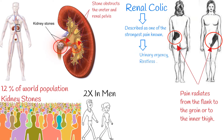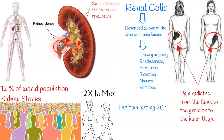This pain is sometimes accompanied by urinary urgency, restlessness, hematuria, sweating, nausea, and vomiting. The pain lasts 20–60 minutes, caused by peristaltic contractions of the ureter as it attempts to expel the stone.